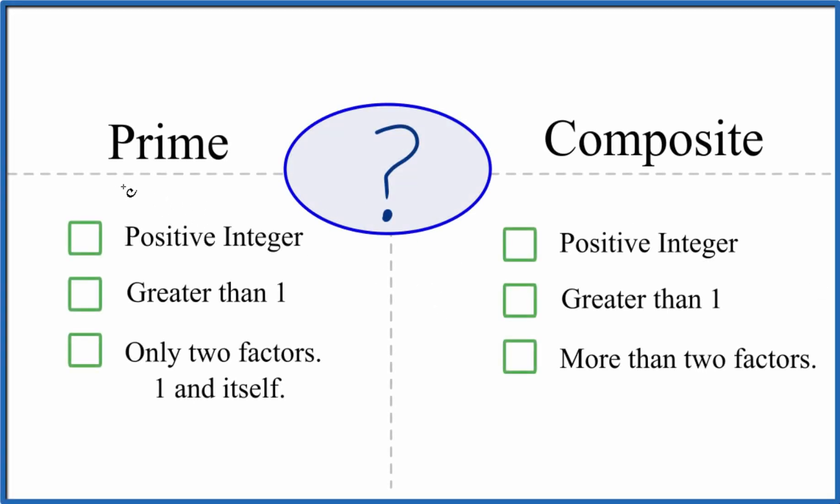By the end of this video you'll be able to tell whether a number is a prime number or a composite number. We'll look at some examples and get some practice. So let's get started.